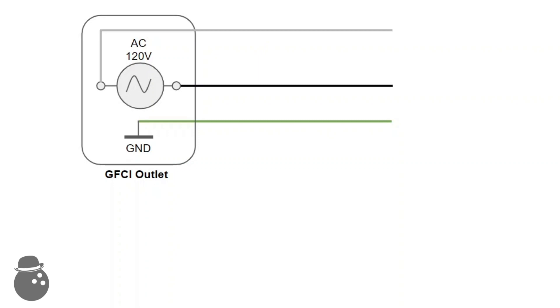Some quick googling reveals the standard American outlet has three ports: a white neutral, a black line, and a green ground. Which would not have been my first guess, so I'm glad I looked it up.